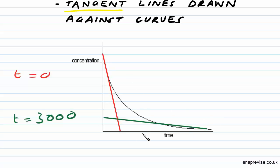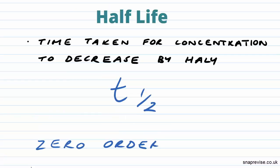So let's have a look at half-life. Half-life is a measure of the time taken for the concentration to decrease by half, and it's represented by this symbol here, t-half. And we can actually use half-life to determine which order reaction we have.